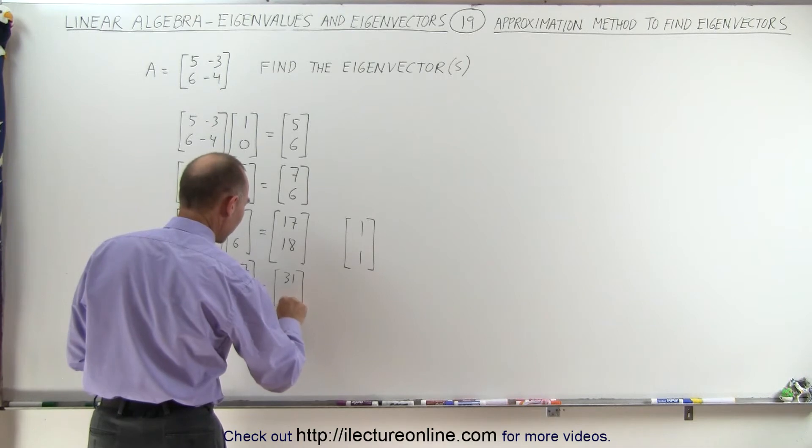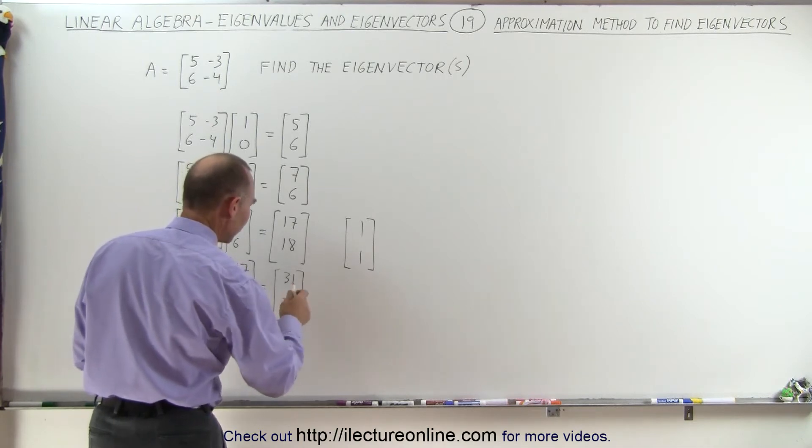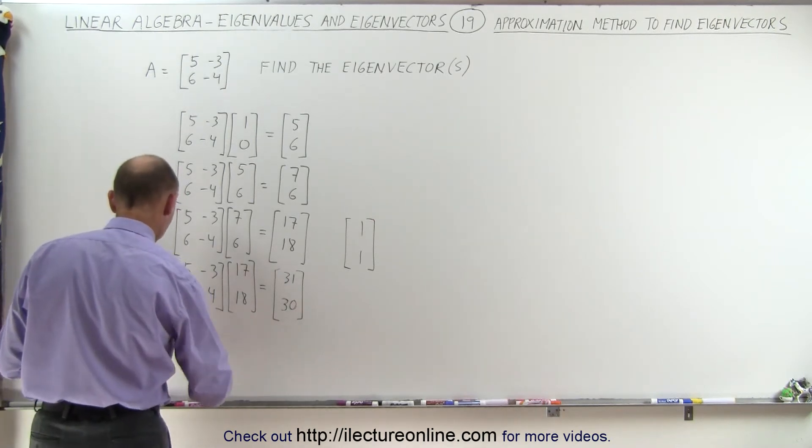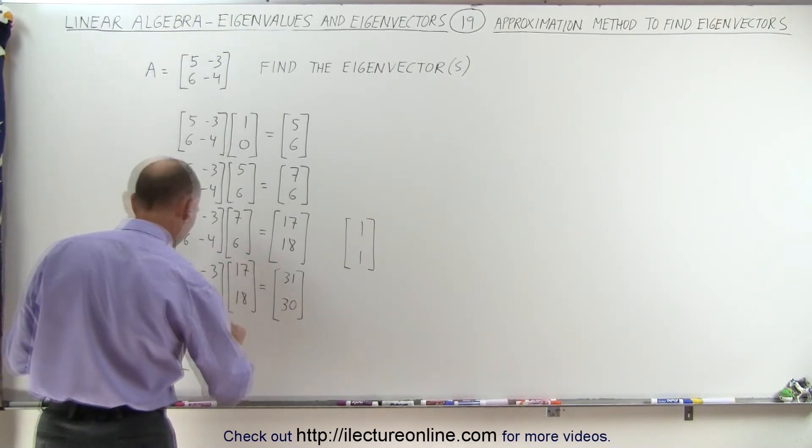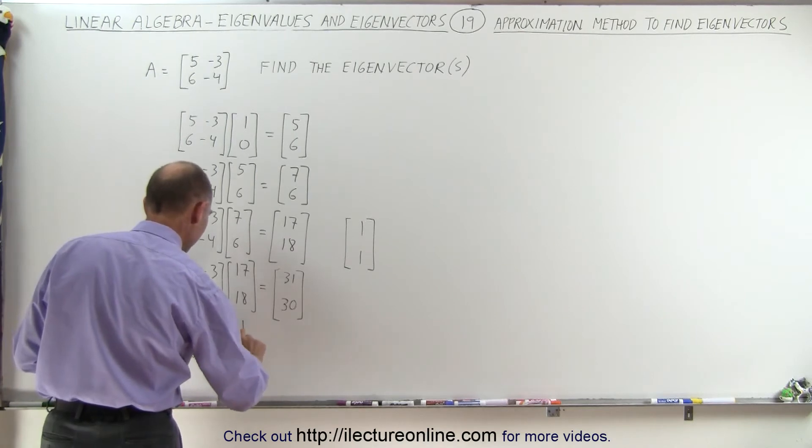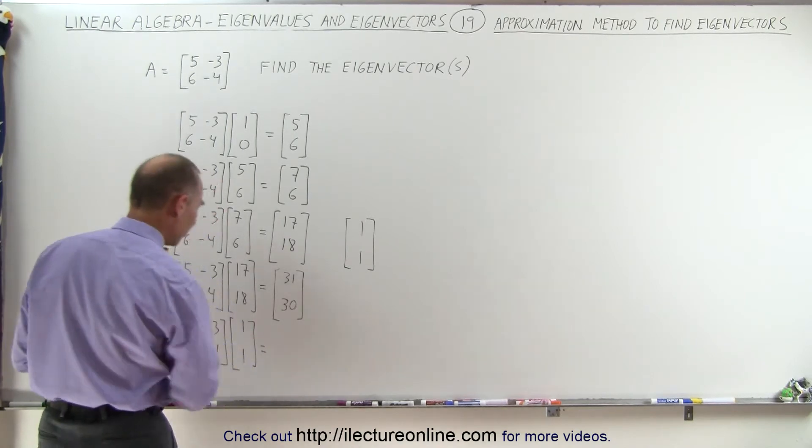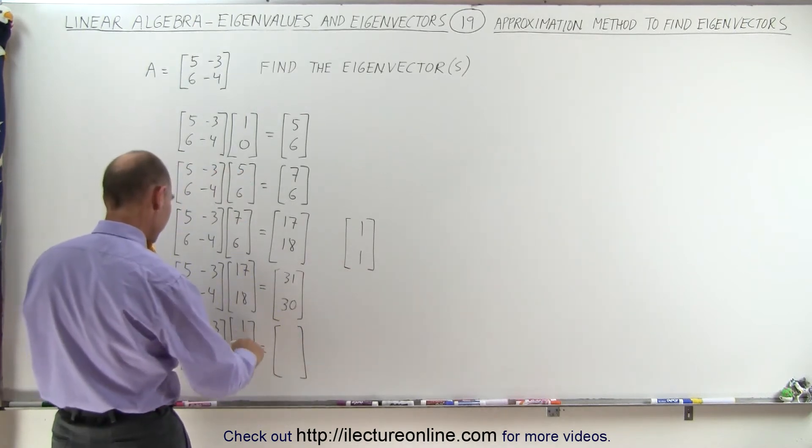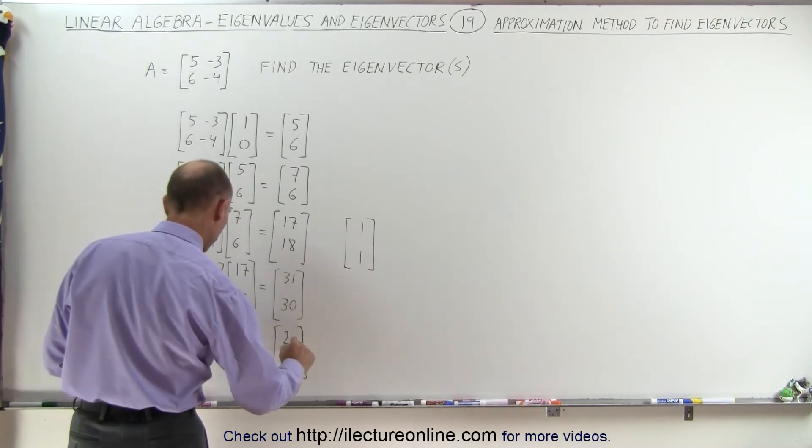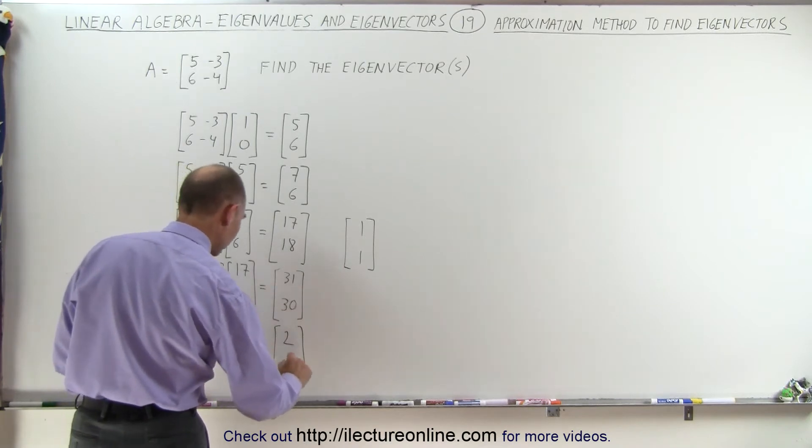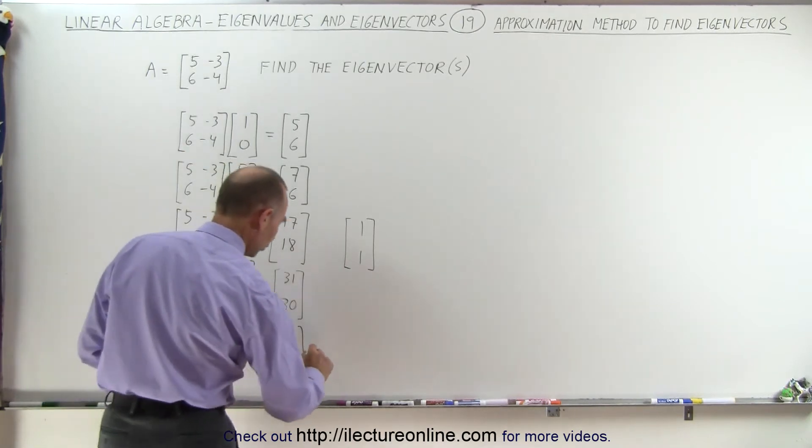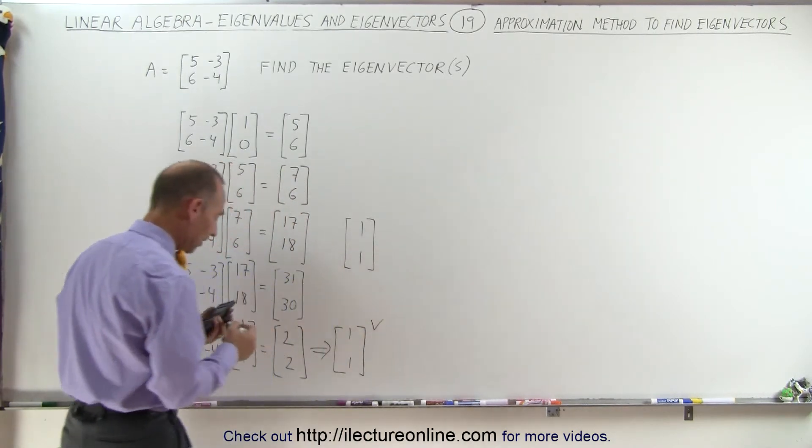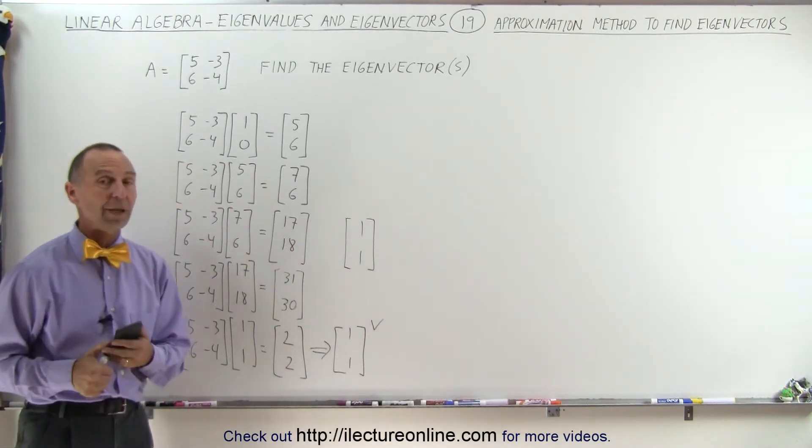So again, notice that the ratio gets to be closer and closer and closer to a 1 to 1 ratio. So finally, I'm going to check this out. I'm going to take 5 -4 and see if that's indeed that this is indeed eigenvector. So when I multiply this together, I get the following. I get 5 minus 3, which is 2. I get 6 minus 4, which is 2. 2 to 2 is, of course, a 1 to 1 relationship. So indeed, that is the eigenvector of this particular matrix.